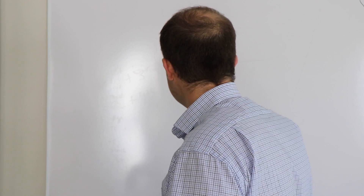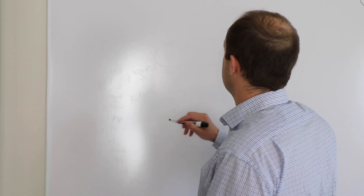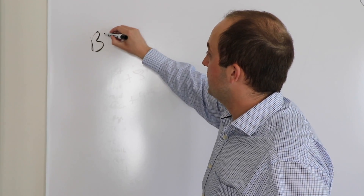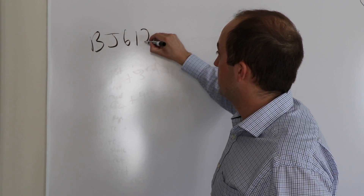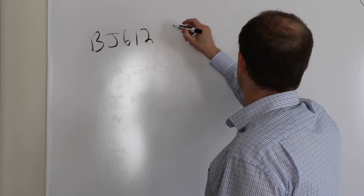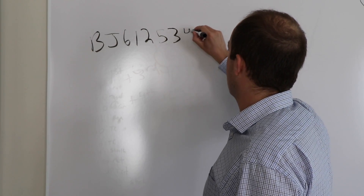We're going to be talking about how to verify a DEA number mathematically. There will certainly be a test question on the MPJE about it. I'll show you basically how to do it. I have a sample DEA number, and we're just going to check to see if it's valid according to the DEA's formula. Our sample is BJ6125341.